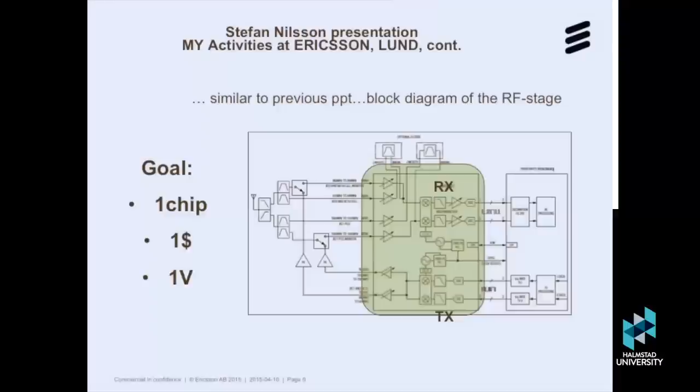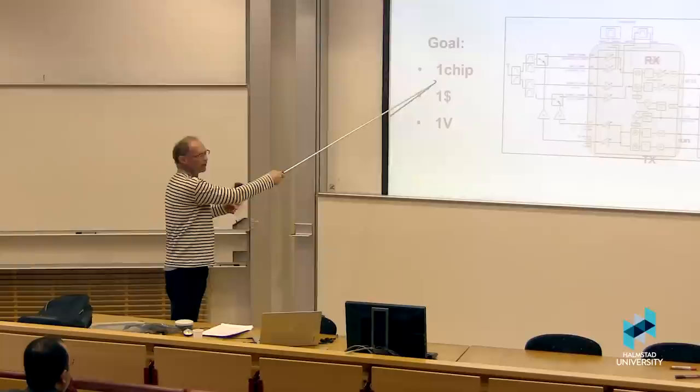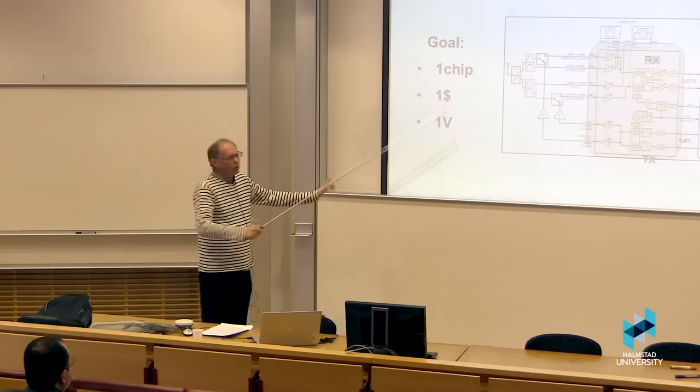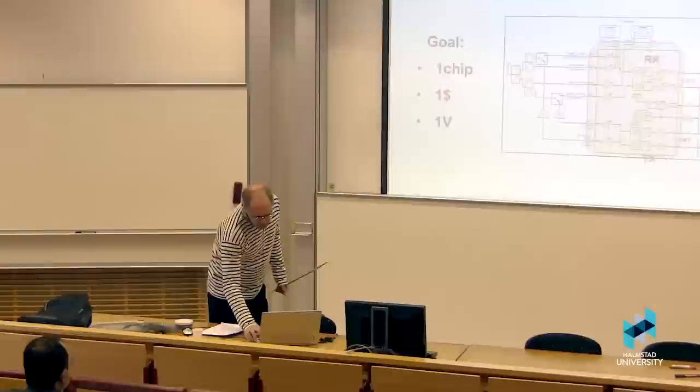One may ask the question why I have an additional antenna up here. It's another receive path. That's a feature they like very much, the operators, that they have two receive paths, meaning they can in principle double the receive signal. They get 3 dB more reference sensitivity at the end of the day. The main goal here is quite simple: one chip. That's what you want at the end of the day. One dollar and one volt. Everything should be in one chip, very inexpensive. One dollar is okay. One volt means you should consume as little as possible power. You should keep that in mind - this is what it's all about in the mobile phone industry.